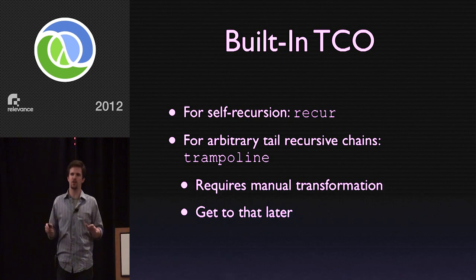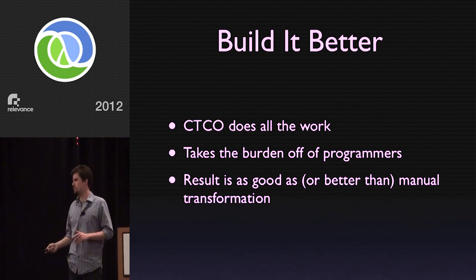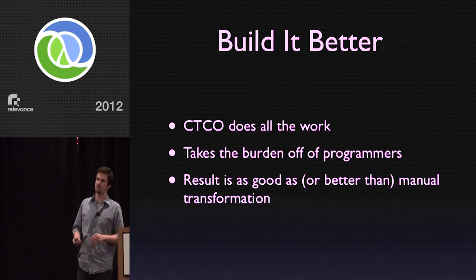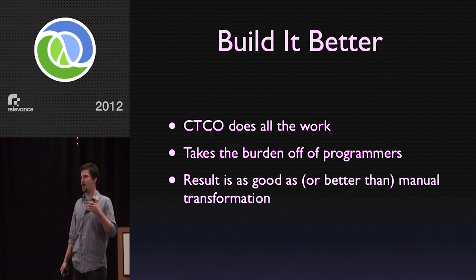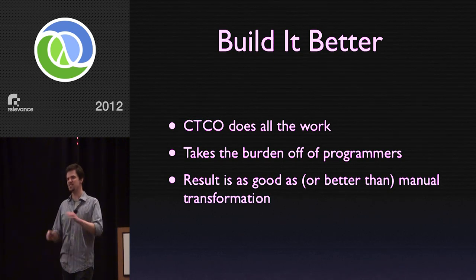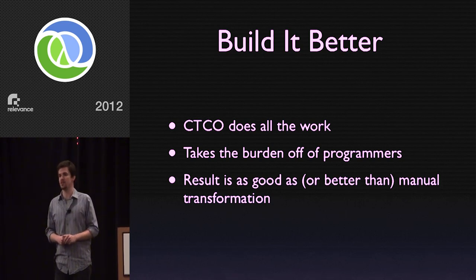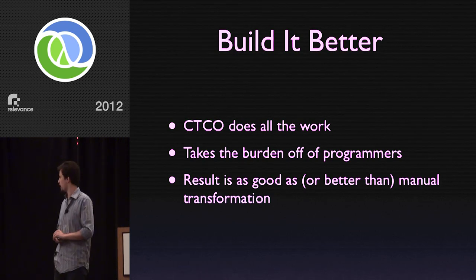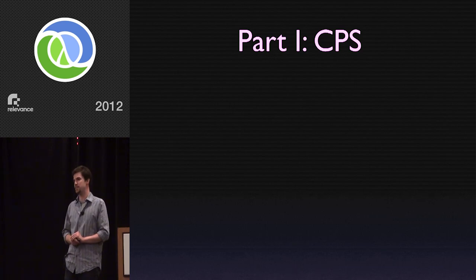That brings us up to speed. We know about tail calls and the story about tail calls in Clojure. So now we can get to the system I wrote called Clojure TCO. The way Clojure stands now, if you want constant space tail calls, you have to roll it yourself — you have to know when to insert recur and when to do the funky trampoline transformation. I'm a compiler hacker and I like to write things that write code for people. So the whole idea behind CTCO is you just write your code the way you want it and let the compiler handle it for you. The compiler transformation will make it as good or better than you could do by hand. So we're ready to start talking about CTCO transformations, which means continuation passing style.